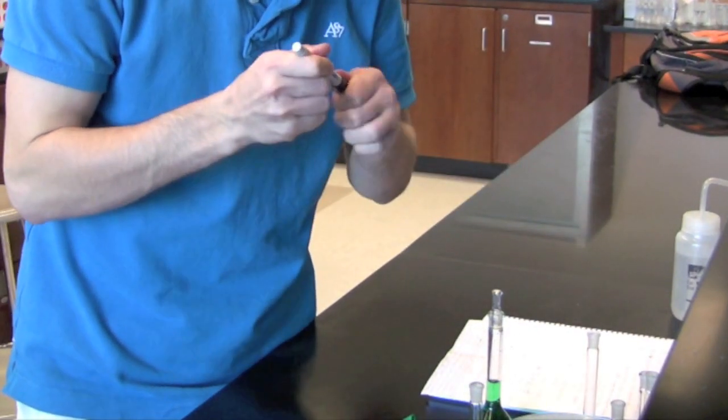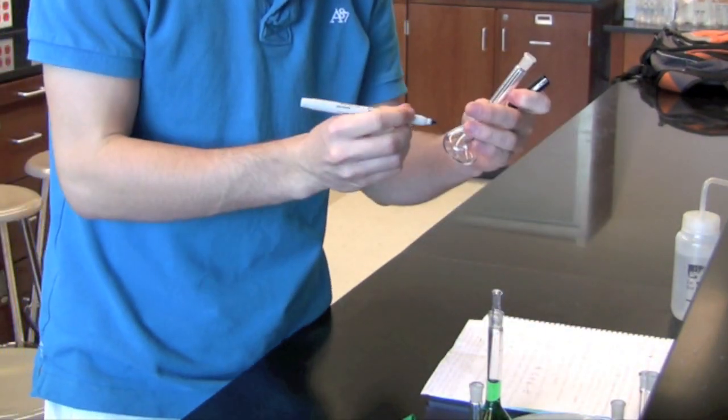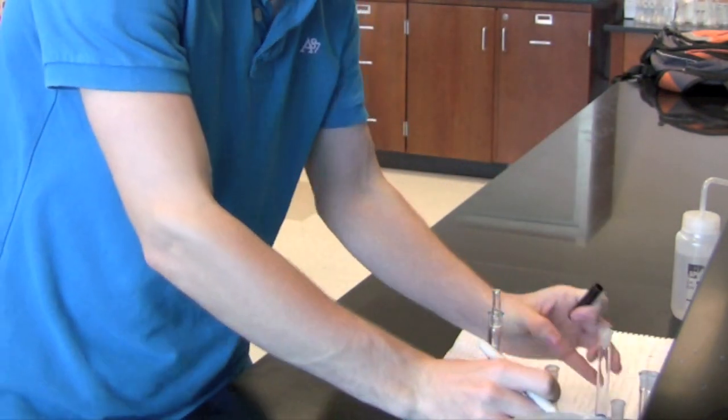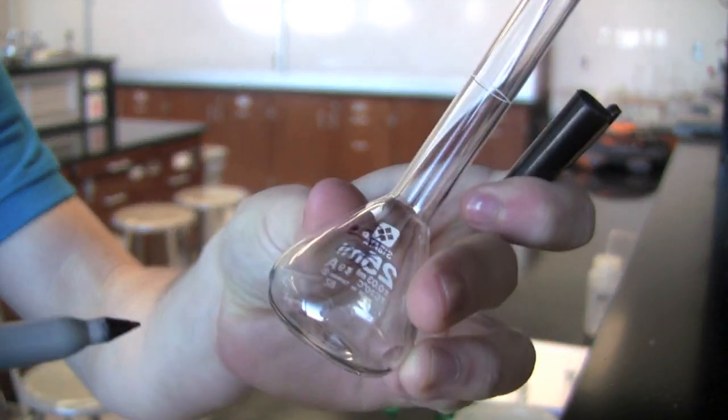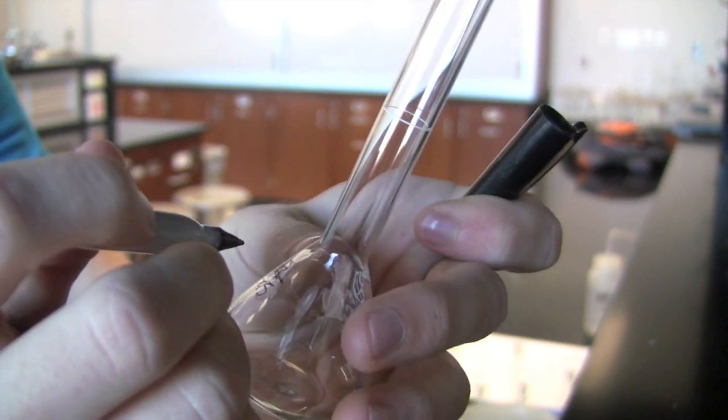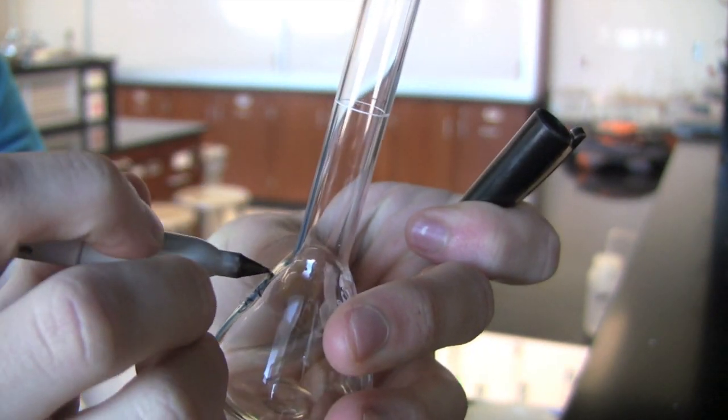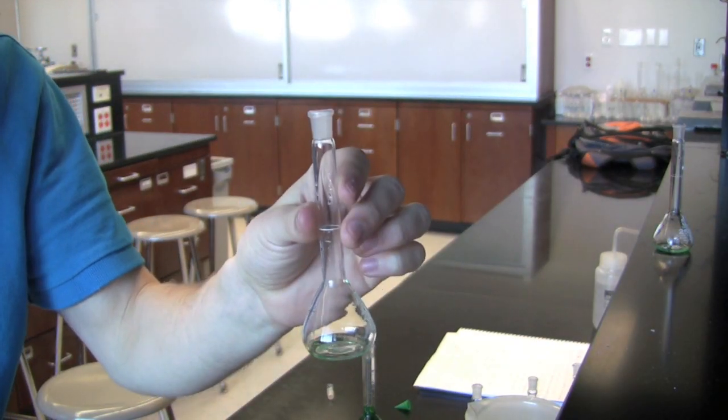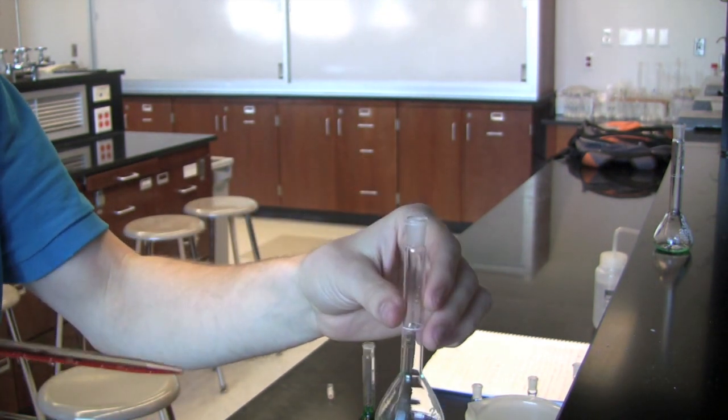Go ahead and label the volumetric flasks with a sharpie as 0.2, 0.4, 0.6, 0.8, and 1.0 milliliters over 25 milliliters. This lets us know the ratio of stock solution versus the total volume of diluted solution. Continue this procedure by adding 0.4, 0.6, 0.8, and 1.0 milliliters into the appropriate volumetric flasks.